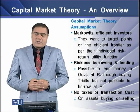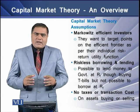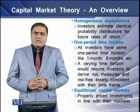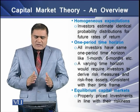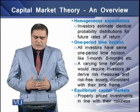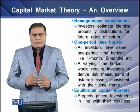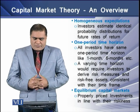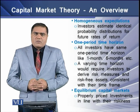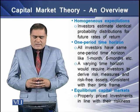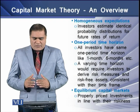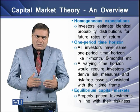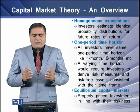The next assumption is no taxes or transaction costs on the buying and selling of assets. Then there is homogeneous expectations, meaning investors estimate identical probability distributions for the future rate of return, in line with the riskiness of the security. The next is the one-period time horizon — capital market theory assumes all investors have the same one-period time horizon, which may be one month, six months, or one year.